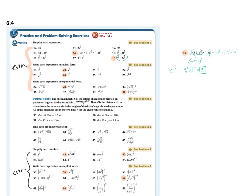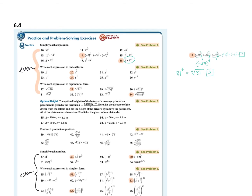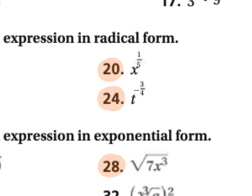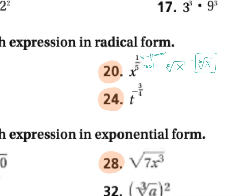Number 20 is X to the one fifth power. X to the one fifth — remember the power is on top and the root is on bottom. So this is the fifth root of X to the first power. You don't need the exponent of one, so we would just call it the fifth root of X. That would be number 20.